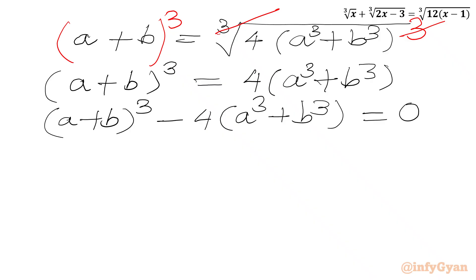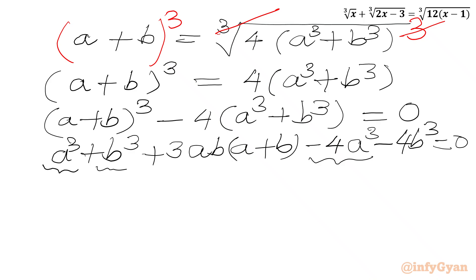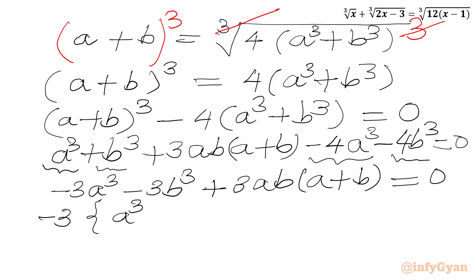Now we will apply the a plus b whole cube formula. So we can write a cube plus b cube plus 3ab times a plus b minus 4a cube minus 4b cube equal to 0. Now a cube minus 4a cube and b cube minus 4b cube gives us minus 3a cube minus 3b cube. Then we write plus 3ab times a plus b equal to 0.